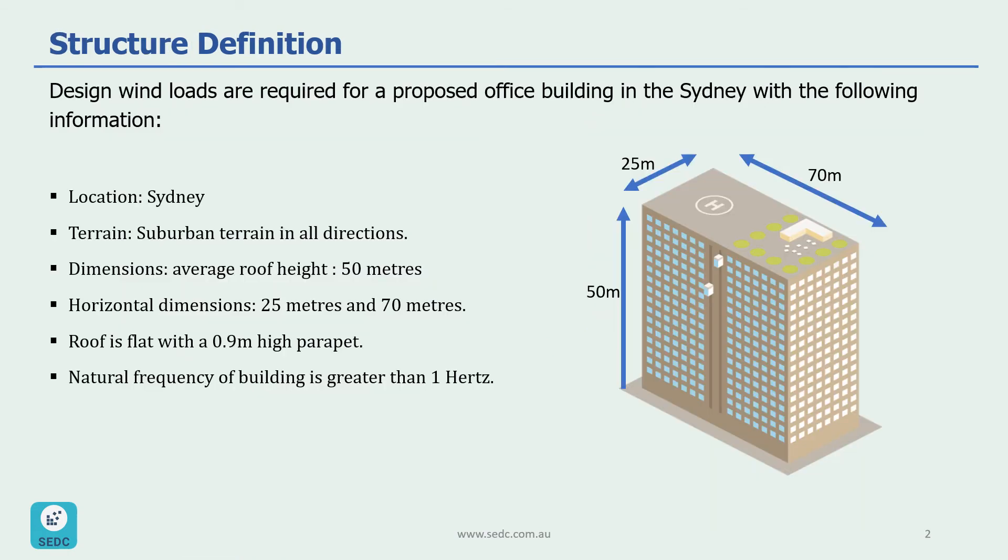Let's define our building that we want to calculate the design wind load for. This building is an office building located in Sydney and it's 50 meters high. The horizontal dimensions of this building is 25 meters by 70 meters and the natural frequency of this building is greater than one hertz. The roof is flat with a 0.9 meter high parapet. Also, this building is located in a suburban terrain area in all directions.